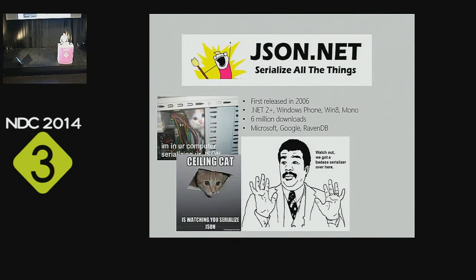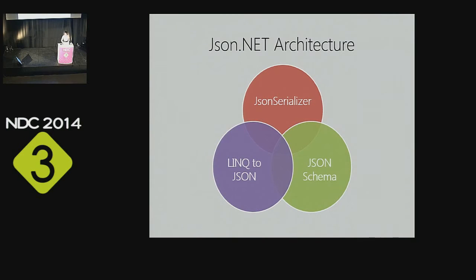Our agenda for today covers the main parts of the JSON.NET architecture. First, the JSON Serializer — about developer efficiency, quickly serializing strongly-typed .NET objects to JSON and back. Then LINQ to JSON — for working with untyped JSON when your JSON doesn't map well to objects or you only care about a specific deeply-nested piece. Finally, JSON Schema — a separate spec, currently a work in progress, which validates JSON similarly to how XML Schema validates XML.